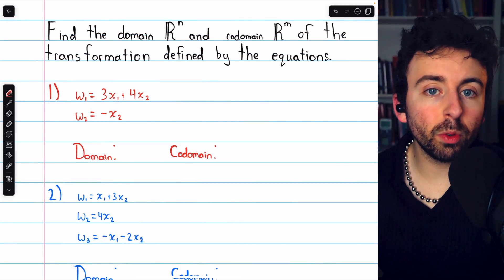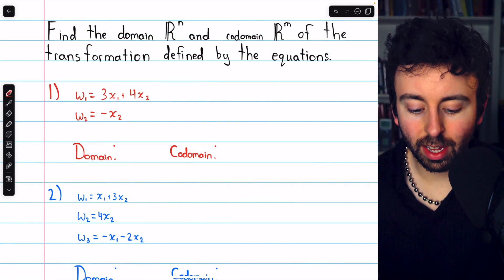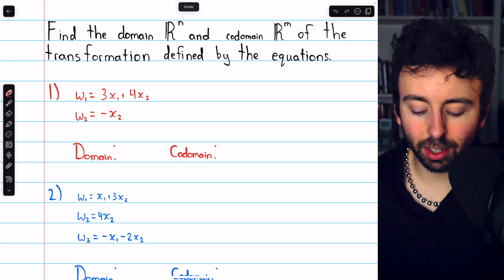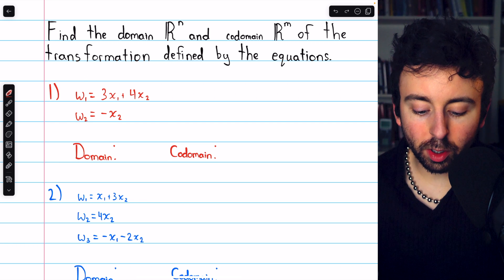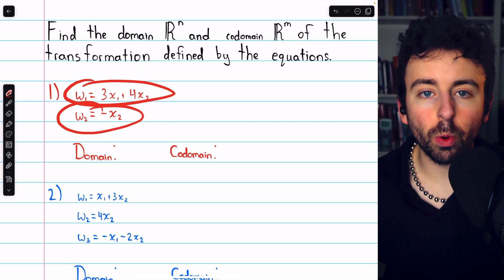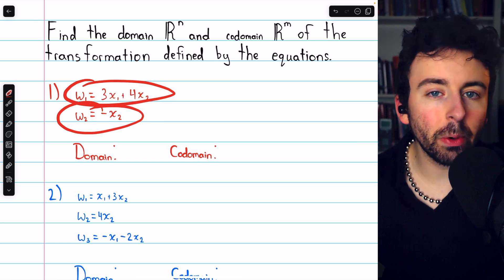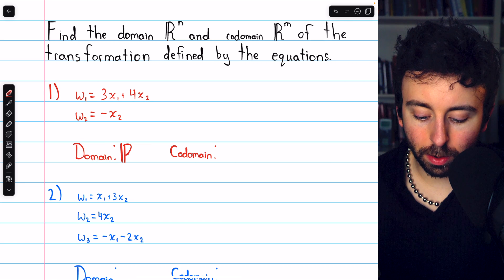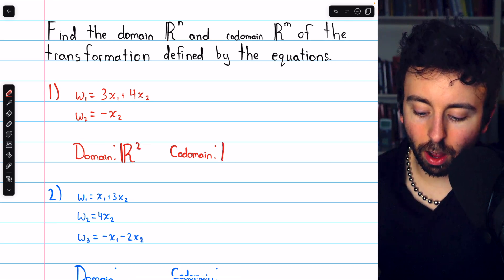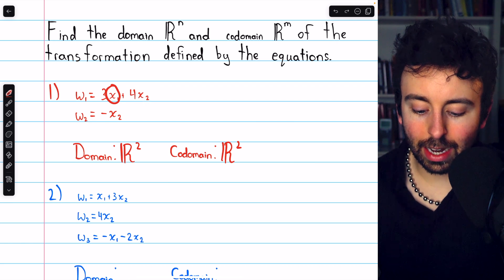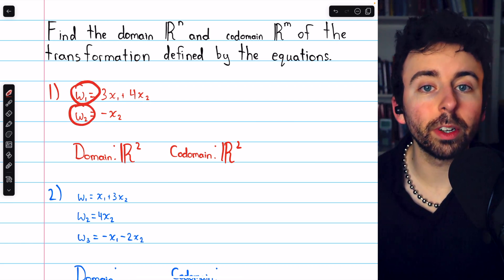In this next set of problems, we're given the transformation equations. Here's problem one. We can see that there are two input variables, x₁ and x₂. Meanwhile, we have two equations, one equation for each output. Each equation tells us how each output is calculated based on the inputs. Hence, the domain is R², and the codomain is also R². Again, there's two inputs, and in this case, there are two equations, one for each output.